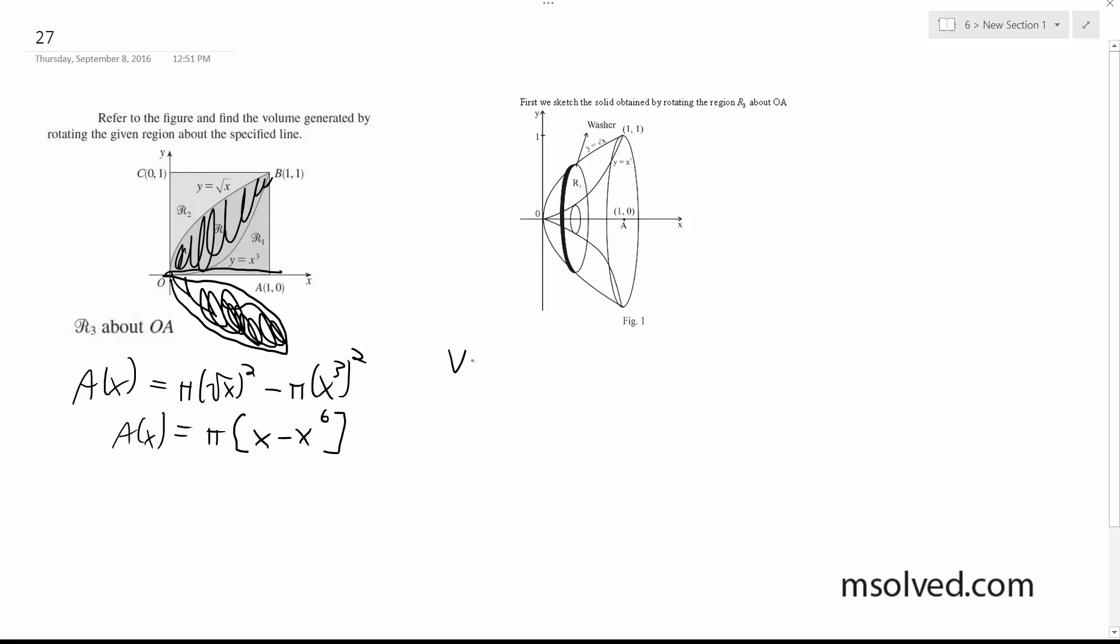So volume equals the integral from 0 to 1 of π(x - x⁶)dx, which equals π[x²/2 - x⁷/7] evaluated from 0 to 1.